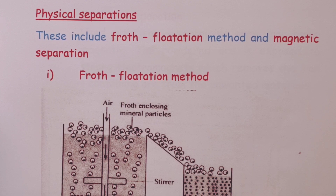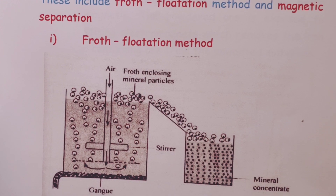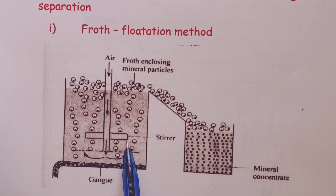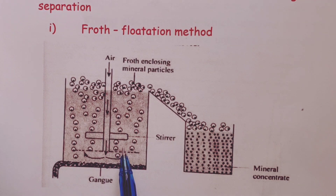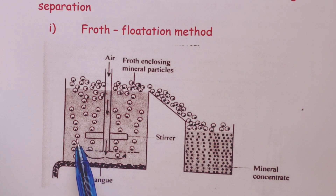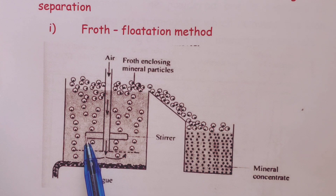When it comes to the froth-flotation method, we have a representation of what goes on in the diagram that follows. In this large container, we have our powdered ore. The powdered ore is mixed with vegetable oil and water in the container on our left. The liquid here is a mixture of vegetable oil and water — these are immiscible liquids.